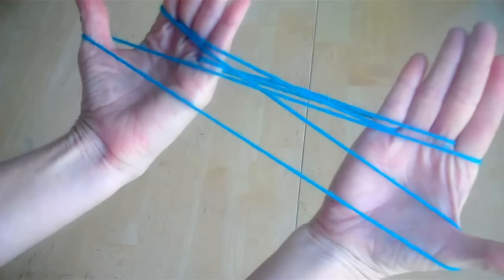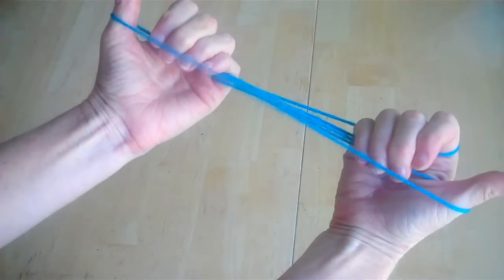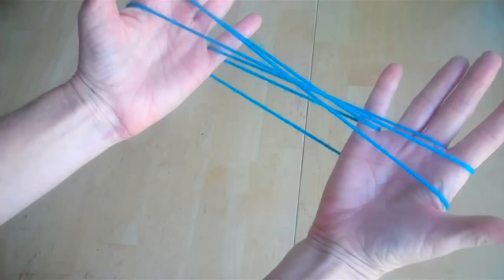Then you're going to turn your palms to face you. The very front string you're going to slip over the back of your hands, including your thumb, just like this.